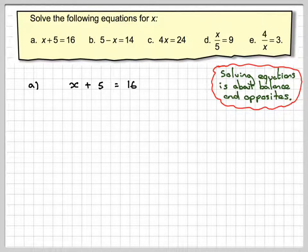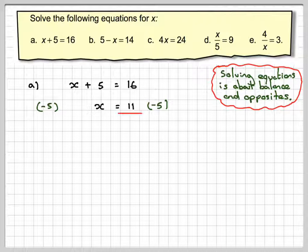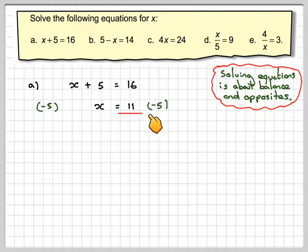So here we've got plus 5, so the opposite of adding 5 is to take 5 from both sides. If I take 5 from this side I get x, and if I take 5 from 16 on this side we get 11. We can do that because we've done the same thing to both sides and we've done the opposite of adding 5.